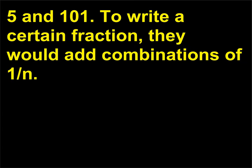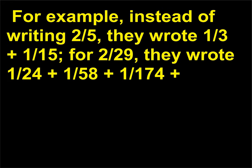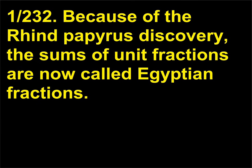To write a certain fraction, they would add combinations of 1/n. For example, instead of writing 2/5, they wrote 1/3 plus 1/15; for 2/29, they wrote 1/24 plus 1/58 plus 1/174 plus 1/232. Because of the Rhind papyrus discovery, the sums of unit fractions are now called Egyptian fractions.